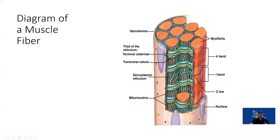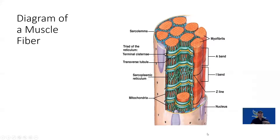Muscles are multinucleated, so they have multiple nuclei. They have mitochondria so we can have energy production from aerobic metabolism. We also have the sarcoplasmic reticulum and transverse tubules, which we'll go into when discussing the chemical reactions and changes in polarity that trigger muscle contraction.